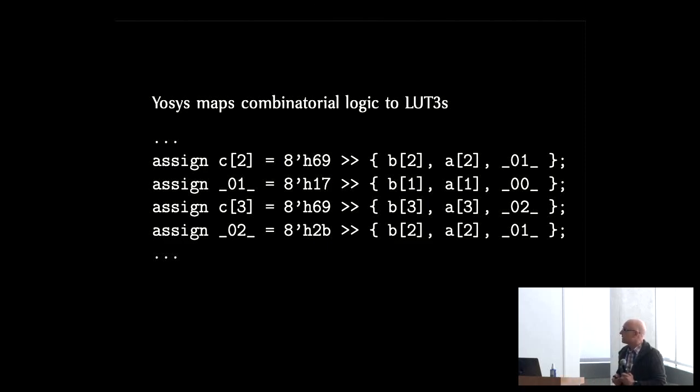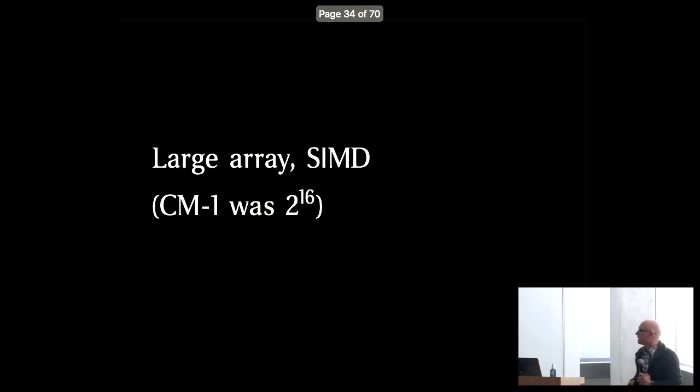How do we make programs for this very simple machine? We don't have to do it by hand anymore. We can just use Yosys, feed in some combinatorial Verilog, out comes an enormous cascade of LUT3s. That is, in effect, the program for this tiny one-bit computer. There's no jumps, obviously. It's just a series of combinatorial operations.